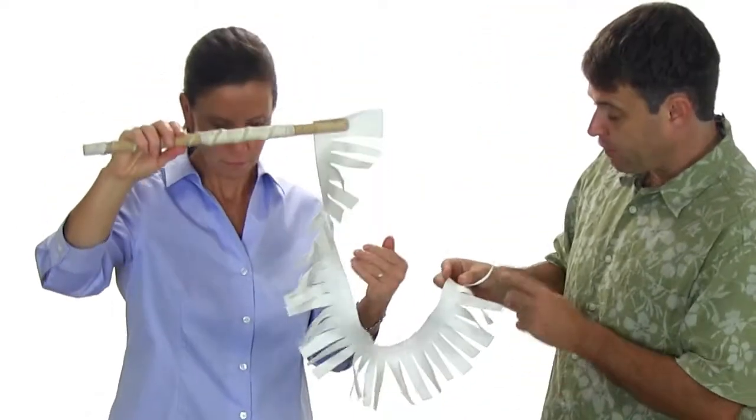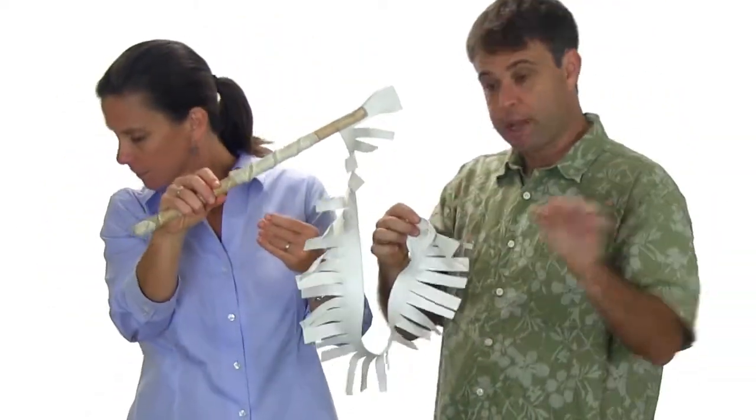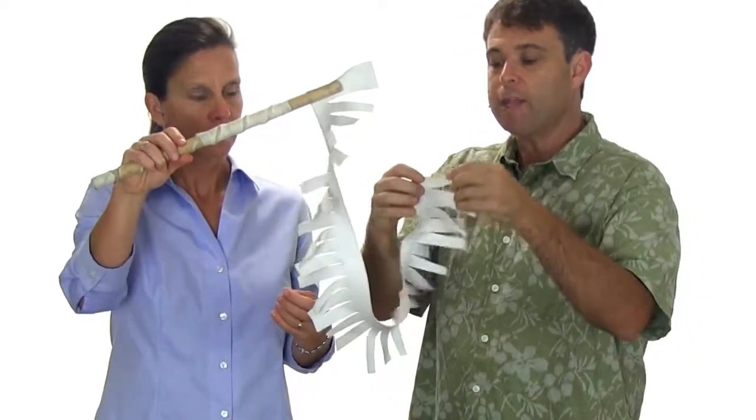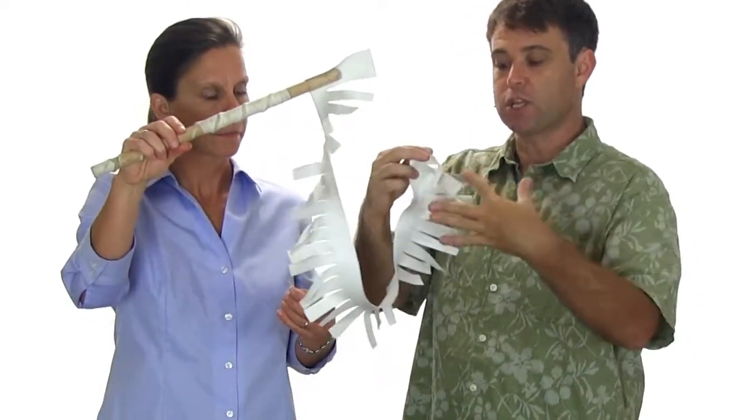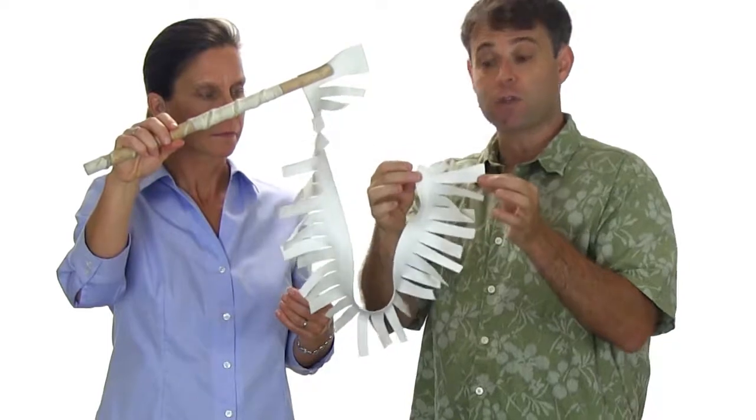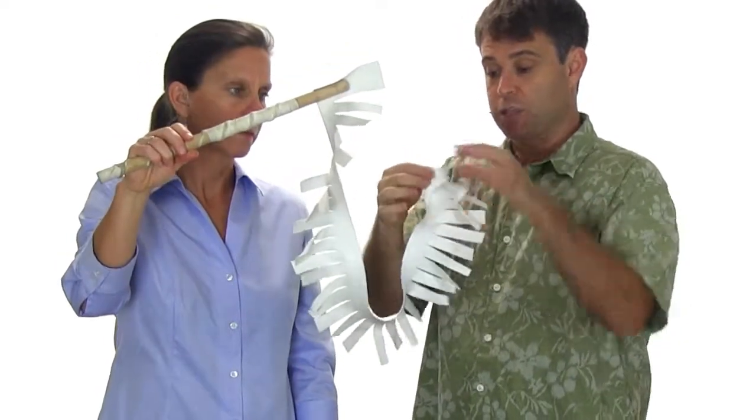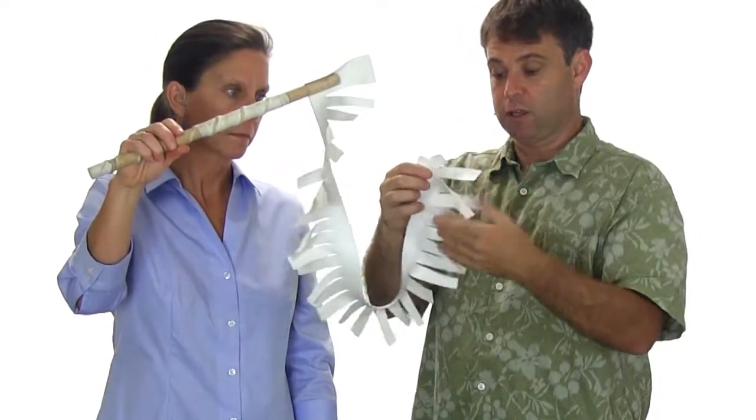What you do is every half inch or so you take a pencil and a ruler and you just make a mark. Then you take some good strong scissors and you cut about three quarters of the way to the end. So you have one long strip of these little tassels.